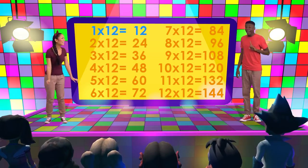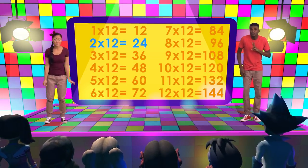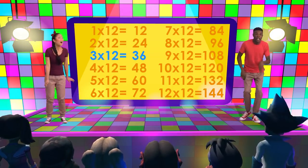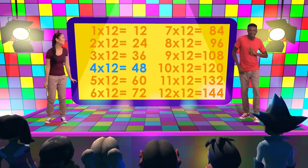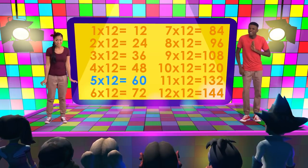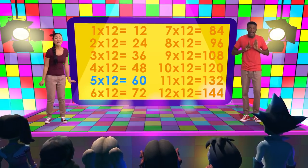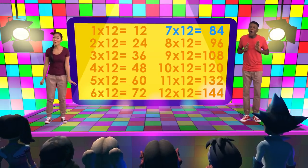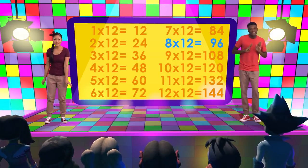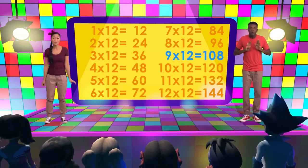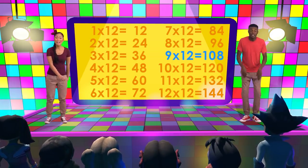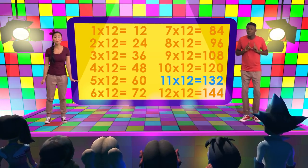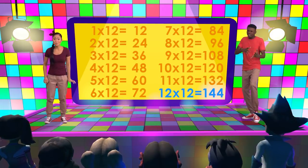1 times 12 is 12. 2 times 12 is 24. 3 times 12 is 36. 4 times 12 is 48. 5 times 12 is 60. 6 times 12 is 72. 7 times 12 is 84. 8 times 12 is 96. 9 times 12 is 108. 10 times 12 is 120. 11 times 12 is 132. 12 times 12 is 144.